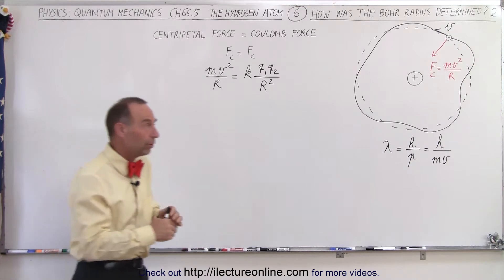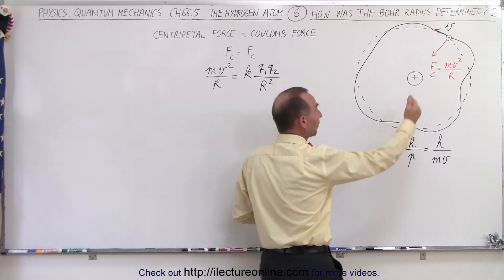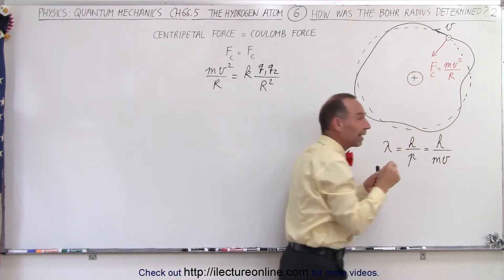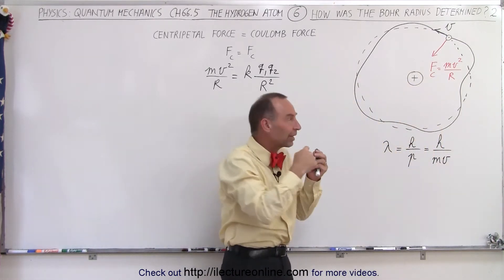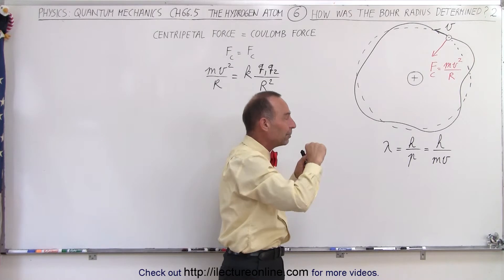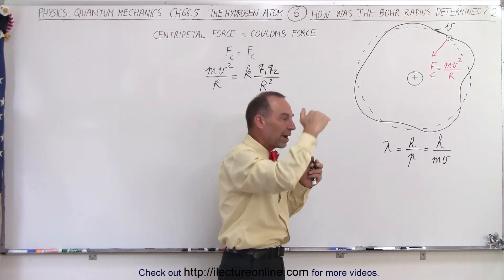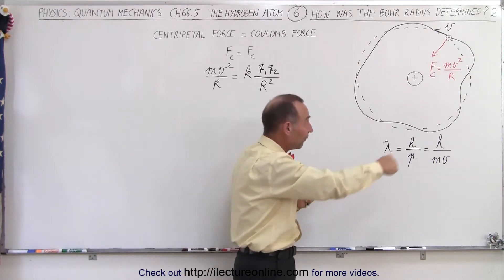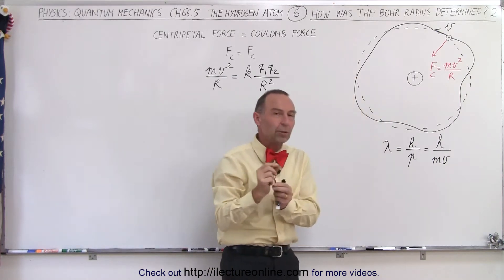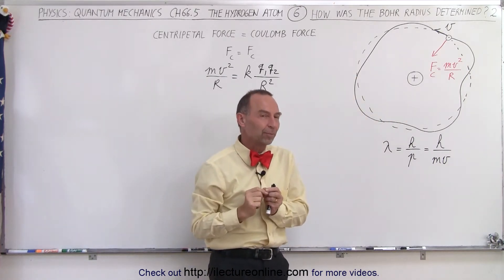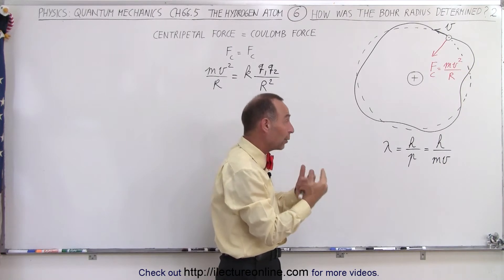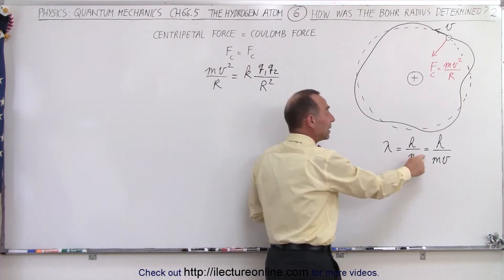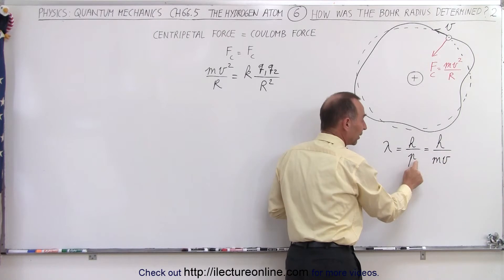We understood that a small particle traveling very fast with velocity V travels like a wave, and so we realized that the path of the electron around the nucleus of an atom had to travel like a wave. Therefore the path length — the circumference of the orbit — had to be equal to an integer number of wavelengths. We also knew from the de Broglie wavelength that the wavelength of a small particle equals Planck's constant divided by the momentum.